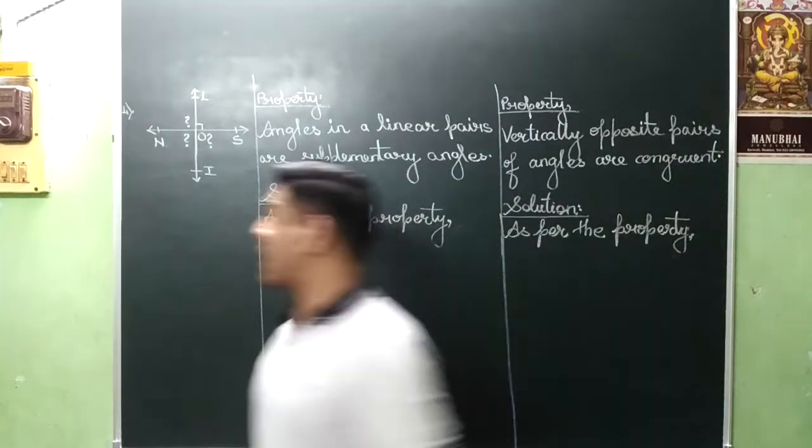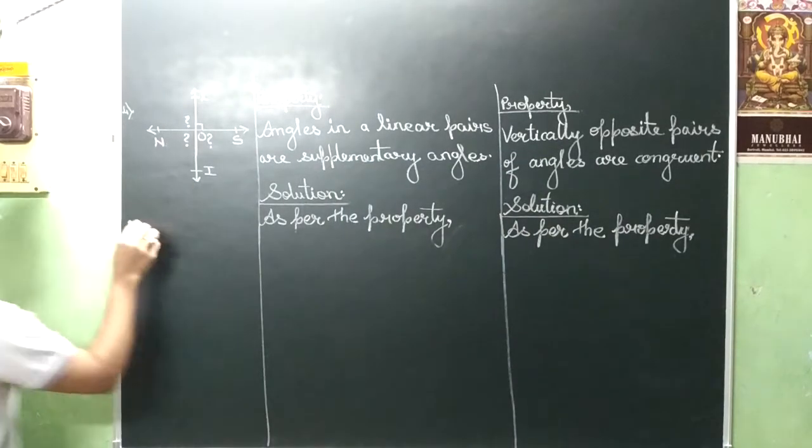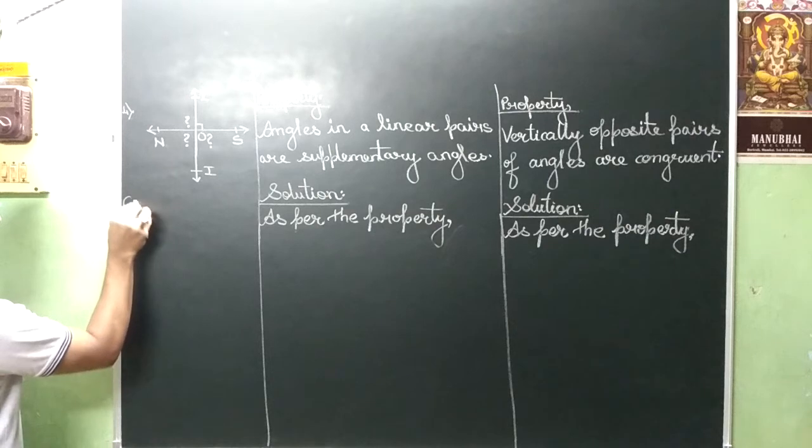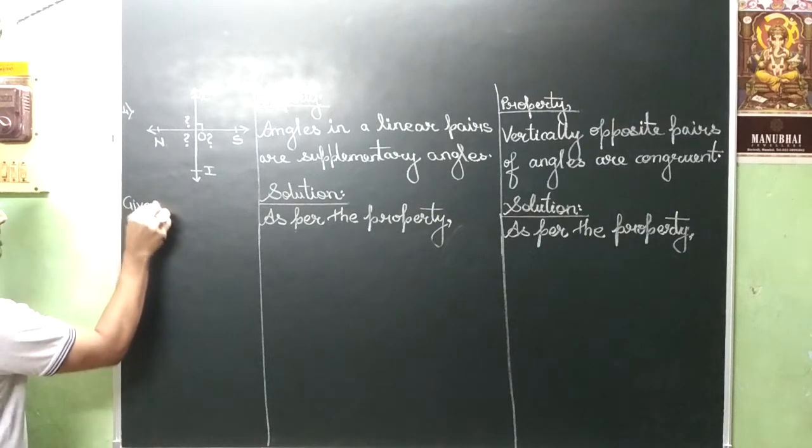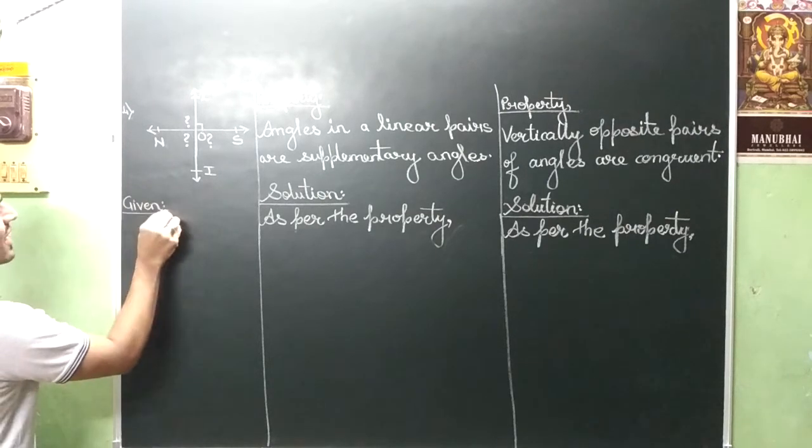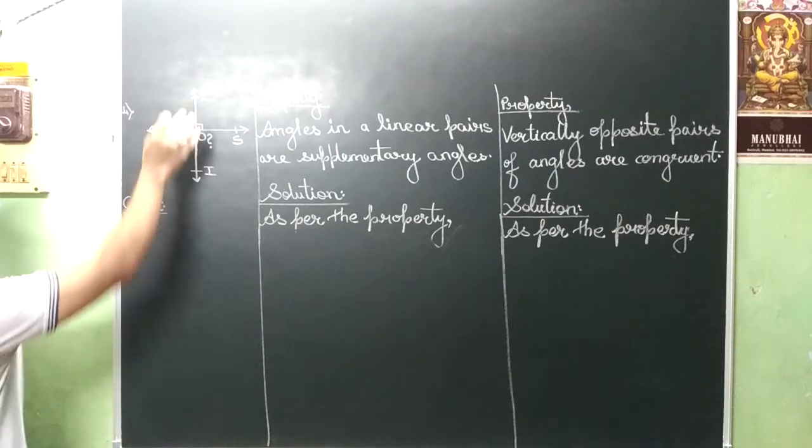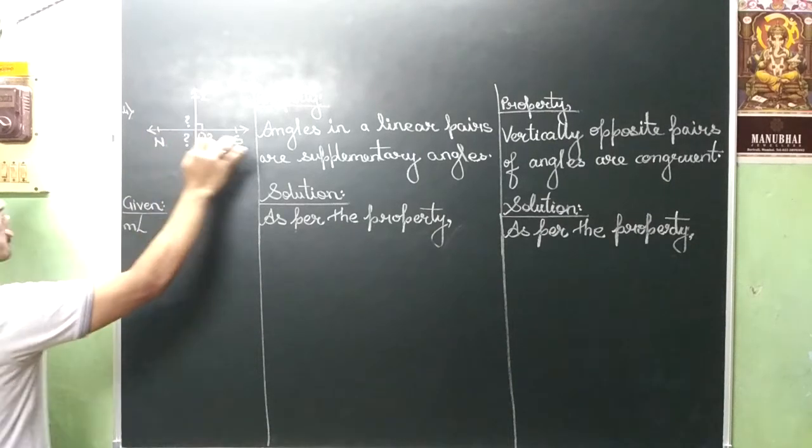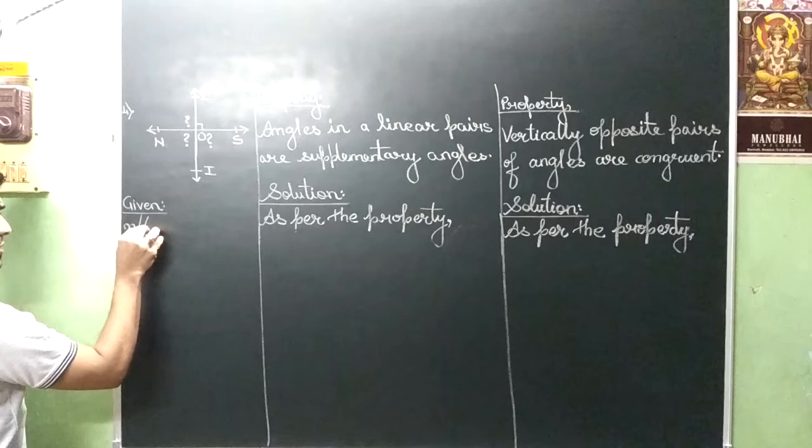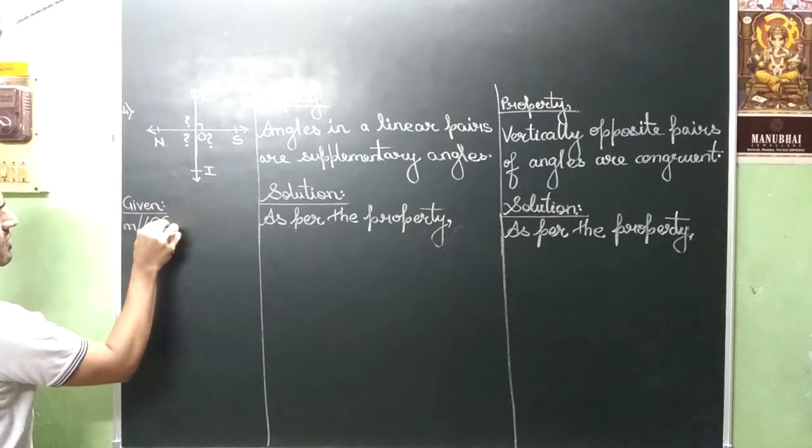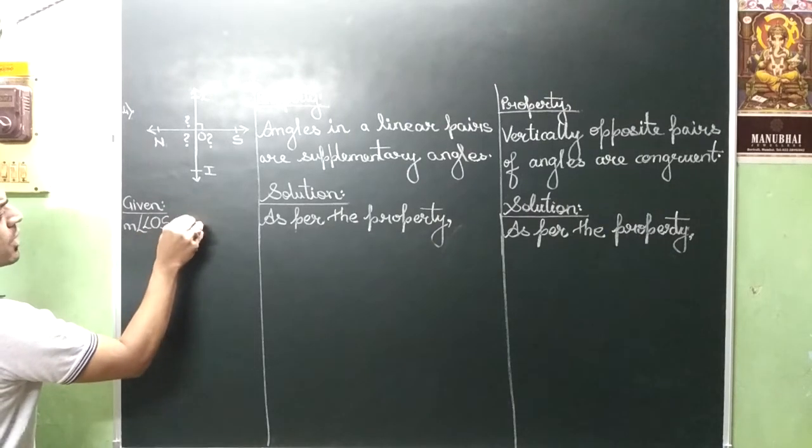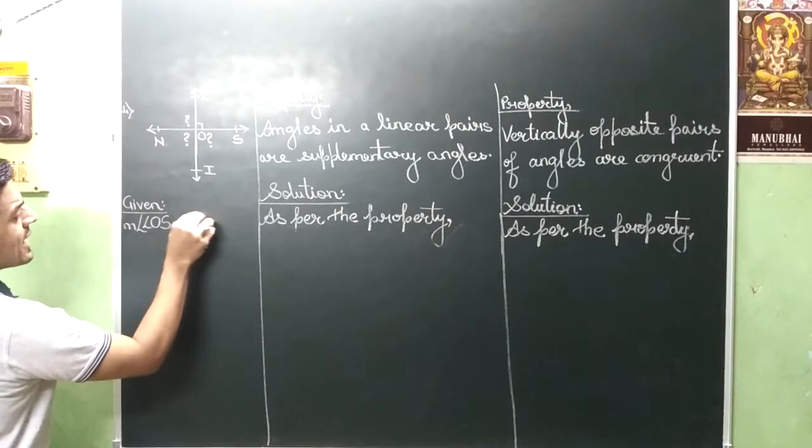So once again, one angle is given to us. So let us write given. Given will be measure angle LOS is equal to 90 degree.